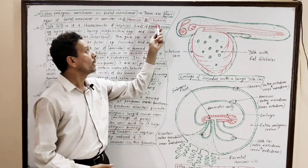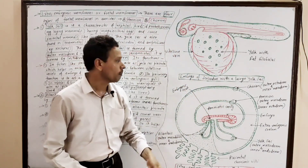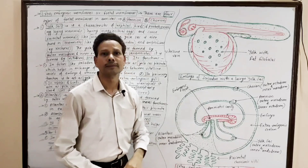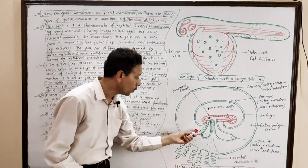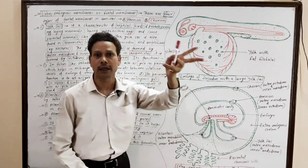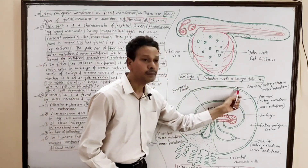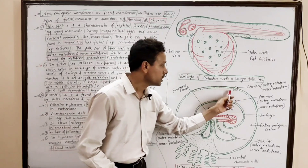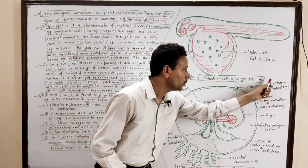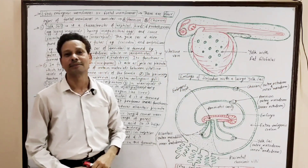The second extra embryonic membrane is the chorion. This chorion is the outer arc, and it is formed by outer ectoderm and inner mesoderm.